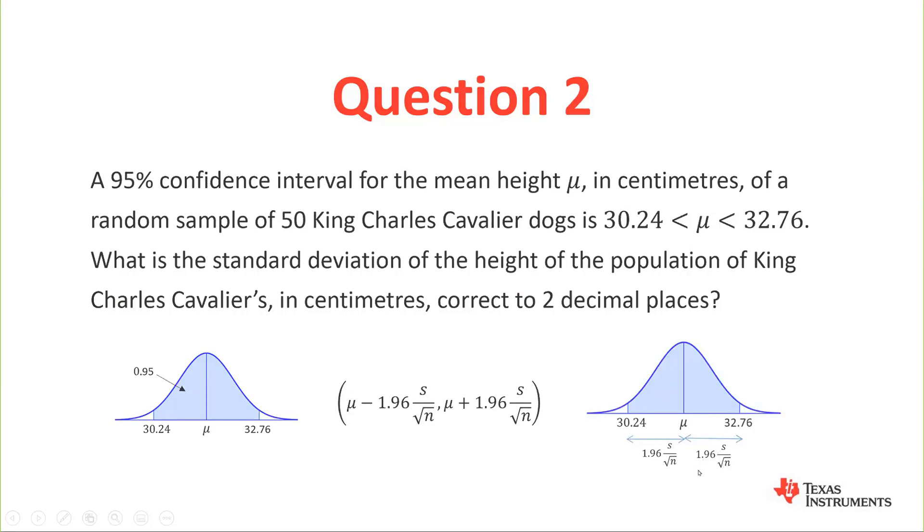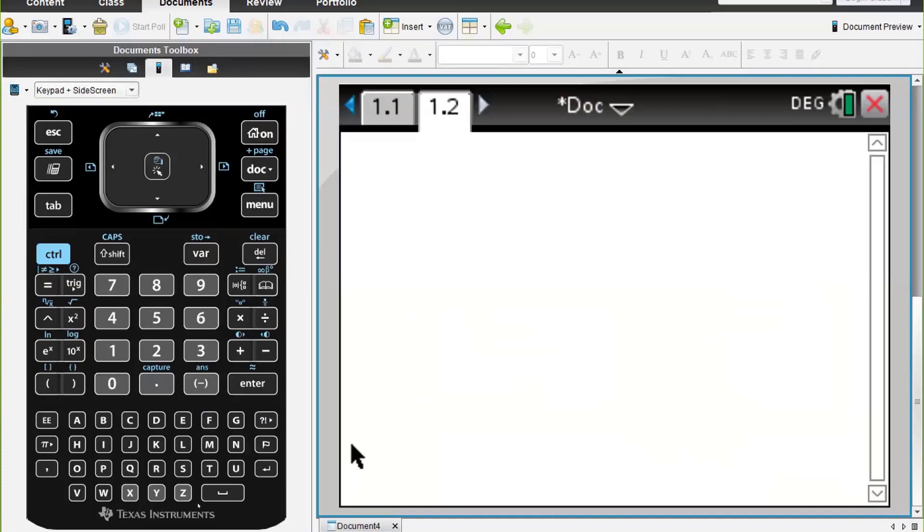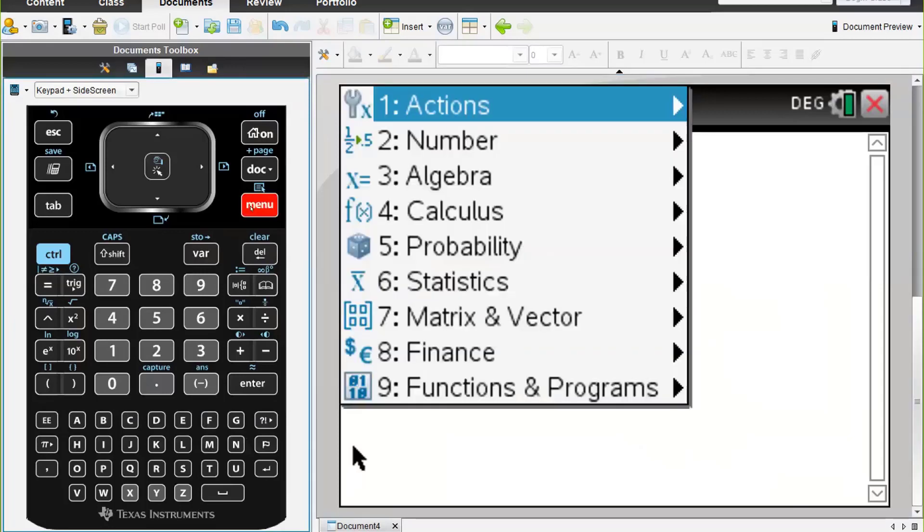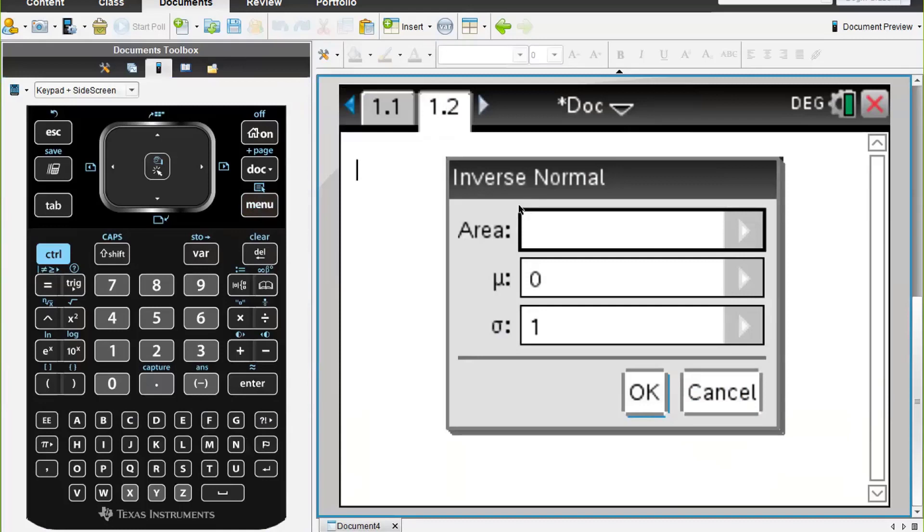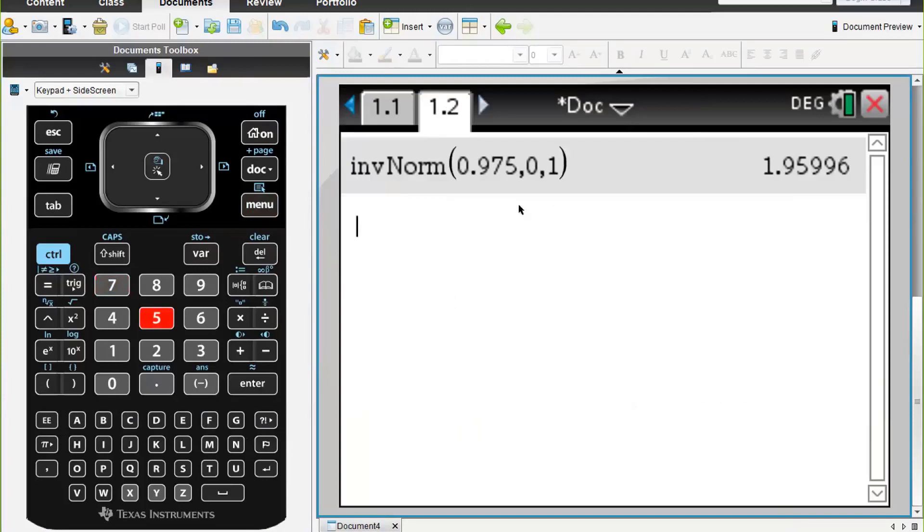The first thing we should do is work out the z-value. Menu, Probability Distributions, Inverse Normal, and the area we need to work this out will be 0.975. Press enter and press enter again, and we get the well-known value to two decimal places: 1.96.